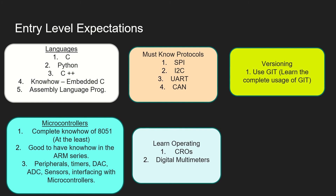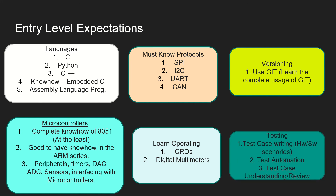Operating systems will be discussed a bit later as a very important topic. You must also know how to operate CROs — recollect how to operate them, what modes are available, all the things needed with CROs. Second is multimeters — we have digital multimeters which are very comfortable right now; learn using them. Learn using analog multimeters as well. You need to know what modes are available and how to test, as interviews still go into depth on fundamentals. And testing — when you build a product, you are expected to know how to write and automate test cases, and understand and review them.